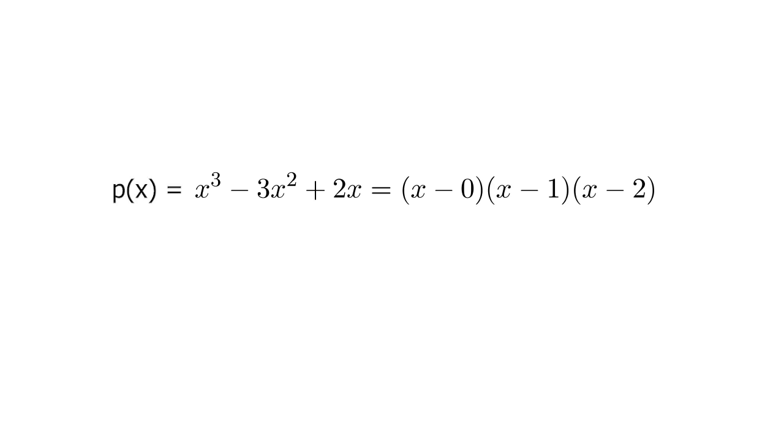Hence, if the prover wants to prove that indeed his or her polynomial has those two roots without disclosing the polynomial itself, he or she needs to prove that their polynomial p(x) is a multiplication of those cofactors (x minus one) and (x minus two), called the target polynomial z(x), and some arbitrary polynomial, let's refer to that as h(x), which is the remaining factor, which is x minus zero.